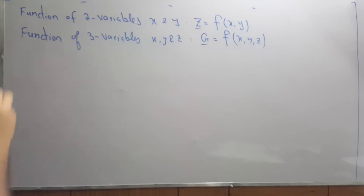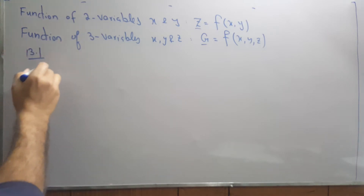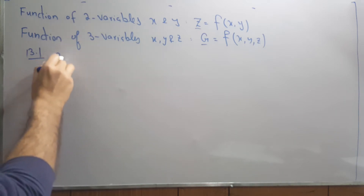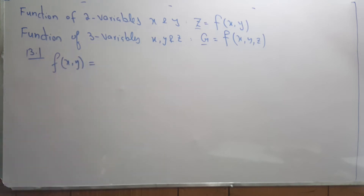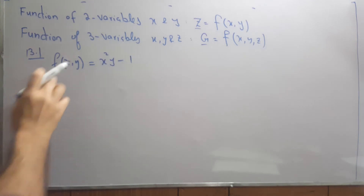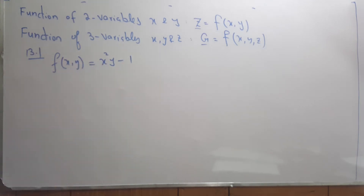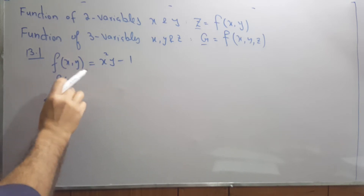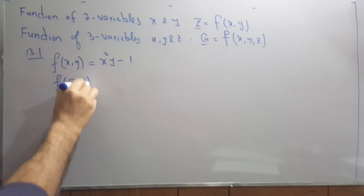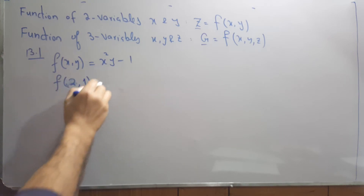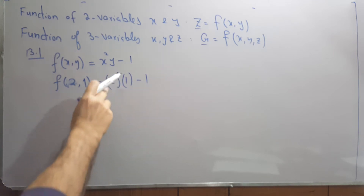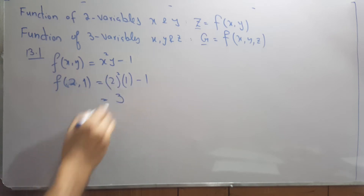In Exercise 13.1, the first question asks you to find the values of a function for particular values of x and y. So if the function is x squared times (y minus 1), and they ask you to find the value when x is 2 and y is 1, just replace x with 2 and y with 1. That gives you 4 times 1 equals 4, and minus 1 gives you 3.